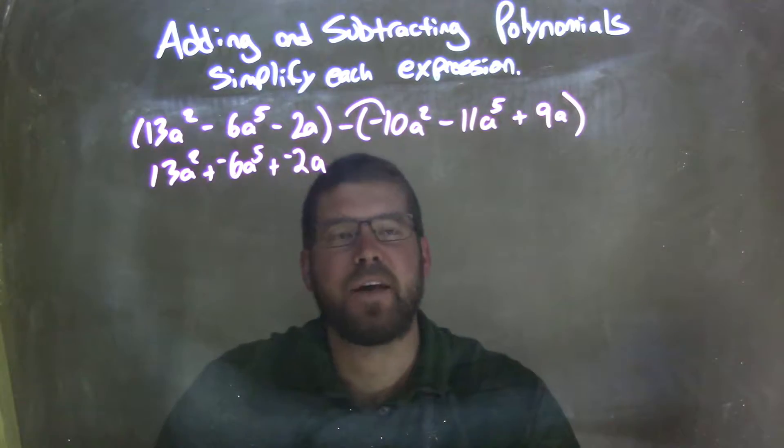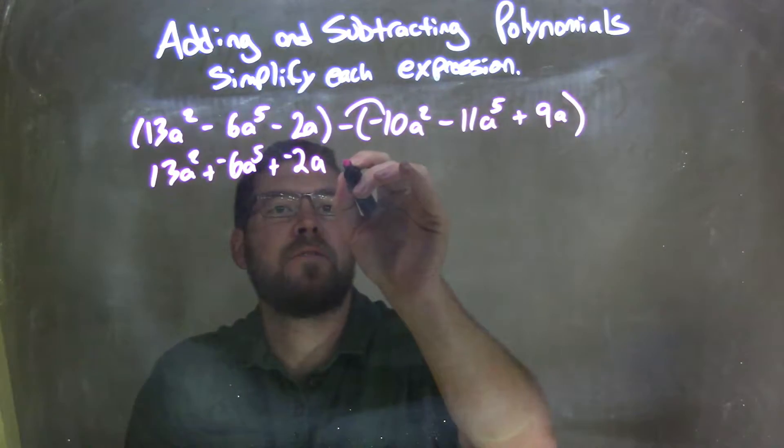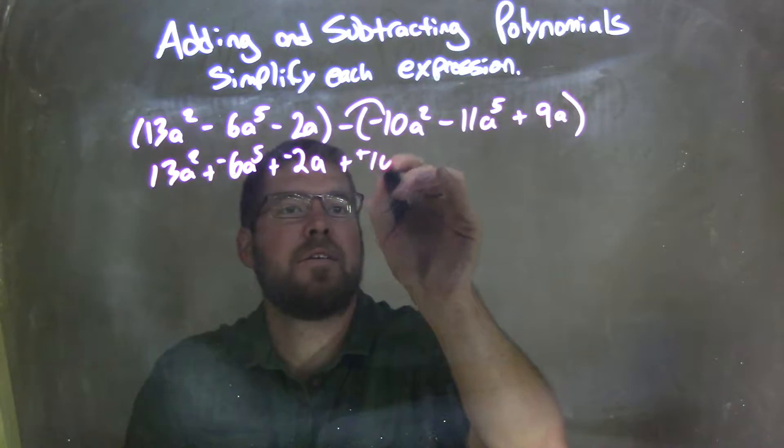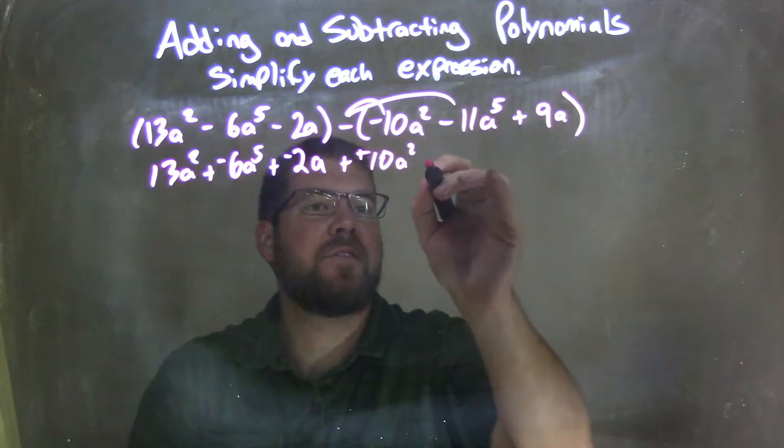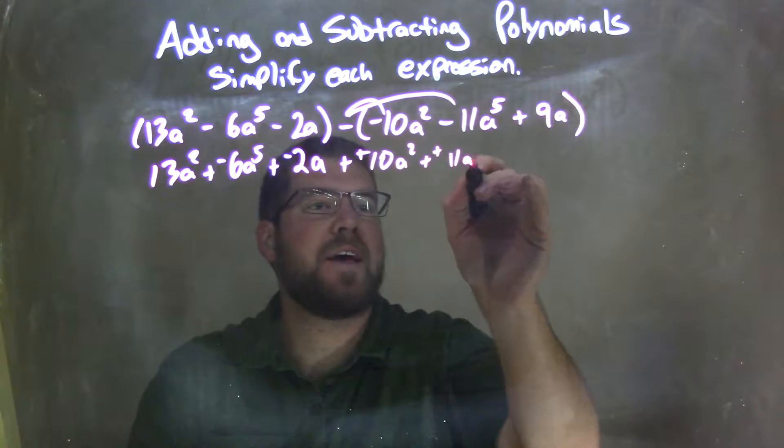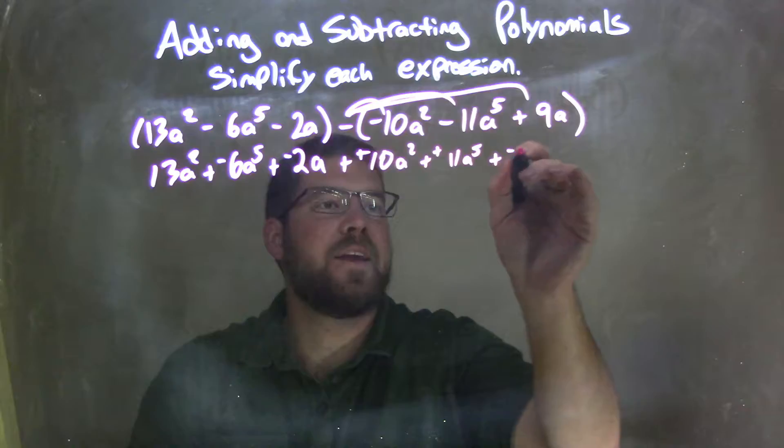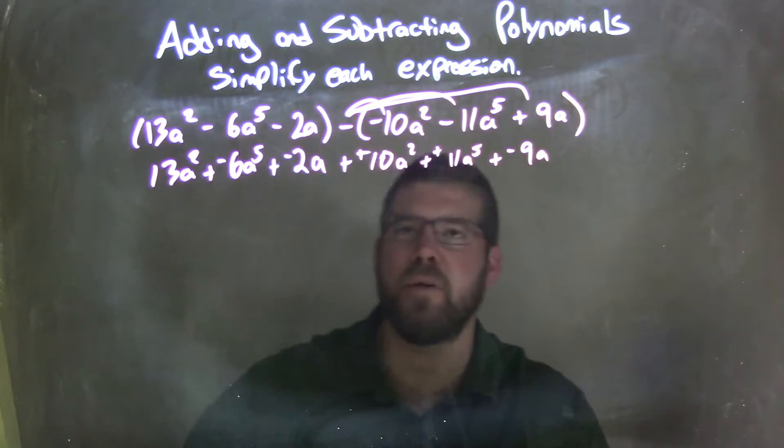Negative times a negative 10a to the second power, so we're adding a positive 10a squared. Distribute again that negative, adding a positive now, positive 11a to the 5th, and distribute the negative, so you're adding a negative 9a. We're distributing that minus sign across.